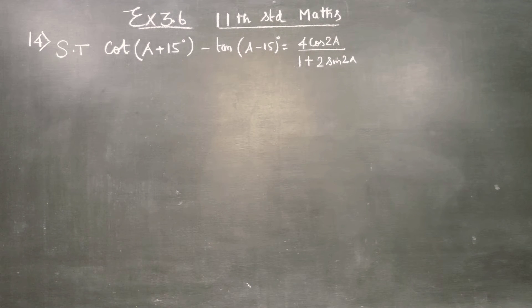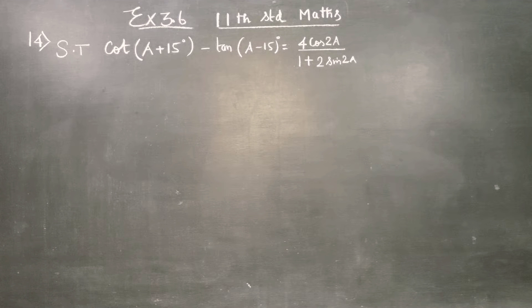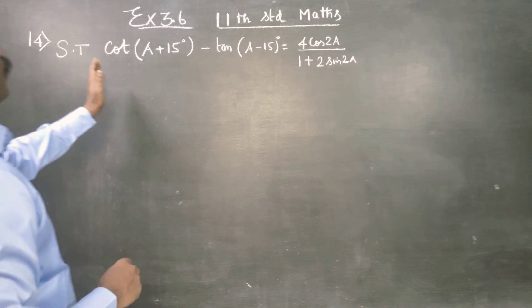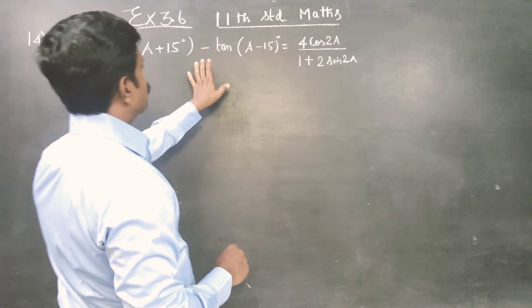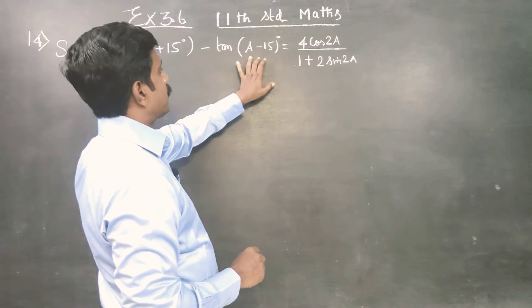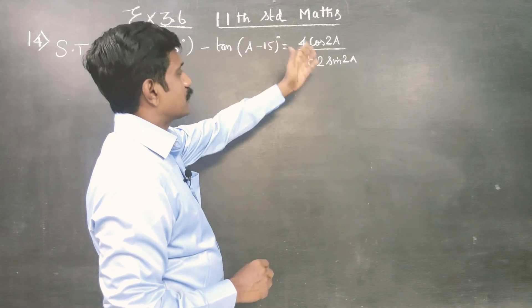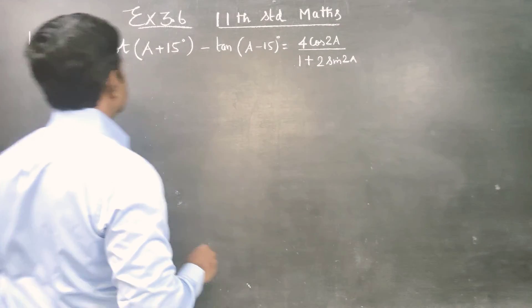Dear Levin Standard students, in exercise number 3.6, sum number 14, we have to show cot(a+15) minus cot(a-15) is equal to this answer.